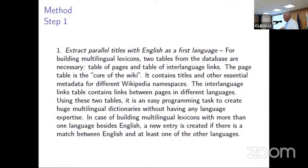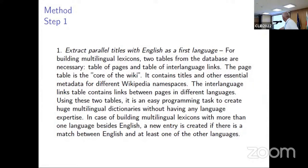To extract parallel titles from Wikipedia, we need two tables from the Wikipedia database: the table of pages and the table of interlanguage links. We use these two tables to extract parallel titles from different Wikipedia editions. It is not a very difficult programming task — it's relatively straightforward.